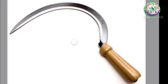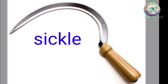What is next? Sickle. What is the spelling of Sickle? S-I-C-K-L-E, Sickle. What is the use of Sickle? Sickle is used for reaping crops such as at harvest time.